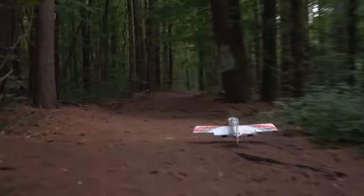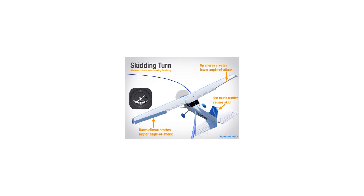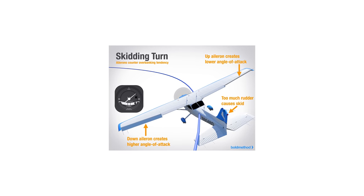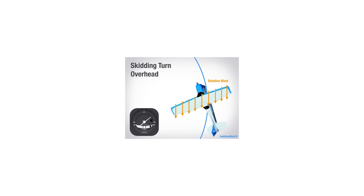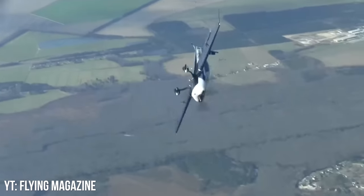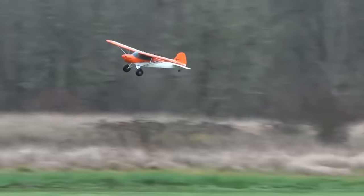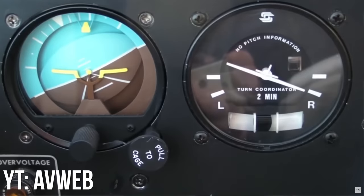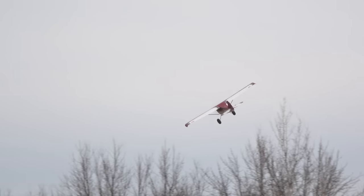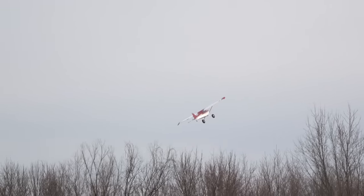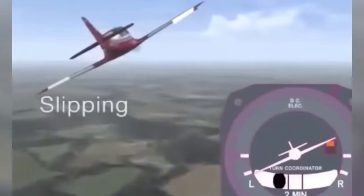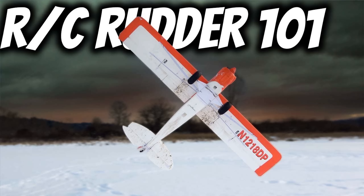Skidding turns vs. slipping turns. A skidding turn is a turn caused by joint aileron and rudder inputs occurring in the same direction, but specifically where the rudder input is more aggressive than the aileron input. This leads to the nose pointing inside the direction of the turn, which can cause an asymmetric stall or spin. Do your best to coordinate your turns, but don't get too aggressive with your happy feet or thumb. Check out our Rudder 101 video for more info on coordinated, slipping, and skidding turns.